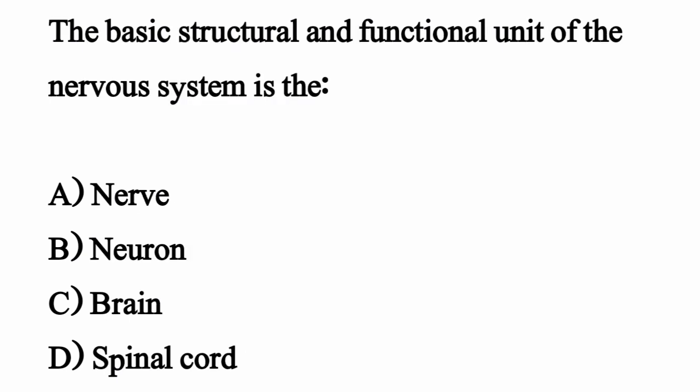The basic structural and functional unit of the nervous system is — option D. The correct option is option B: Neuron.